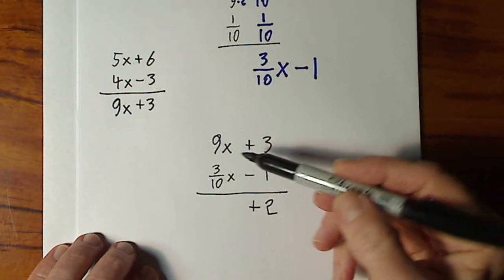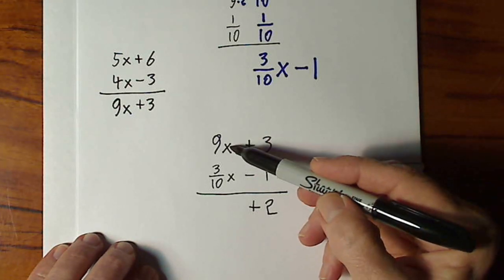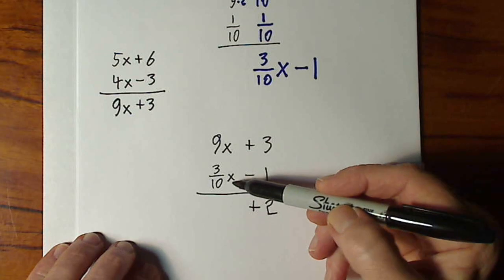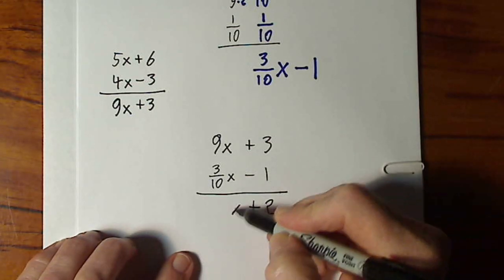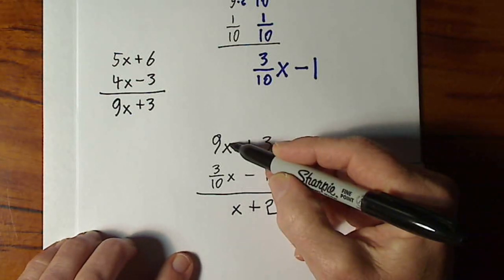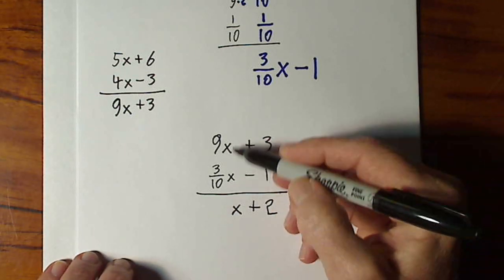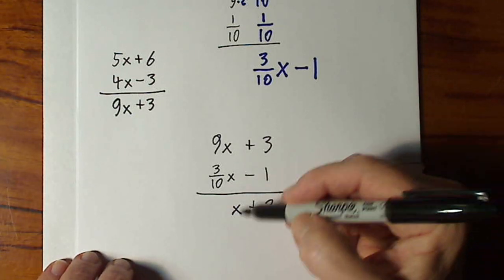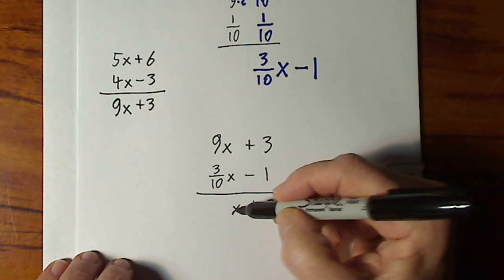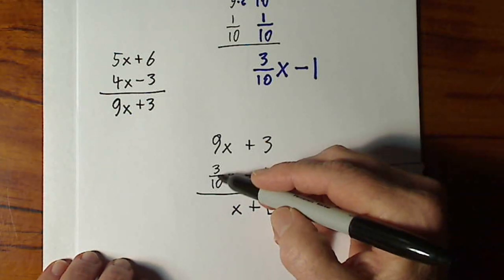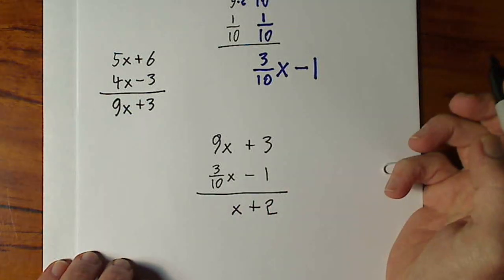When you are adding, remember, I can ignore these x's. They're just going to come along for the ride. You have to have the exact same variable and exponent in order to add or subtract, and you keep the variable and exponent. So I'm really just looking at 9 plus 3 tenths.